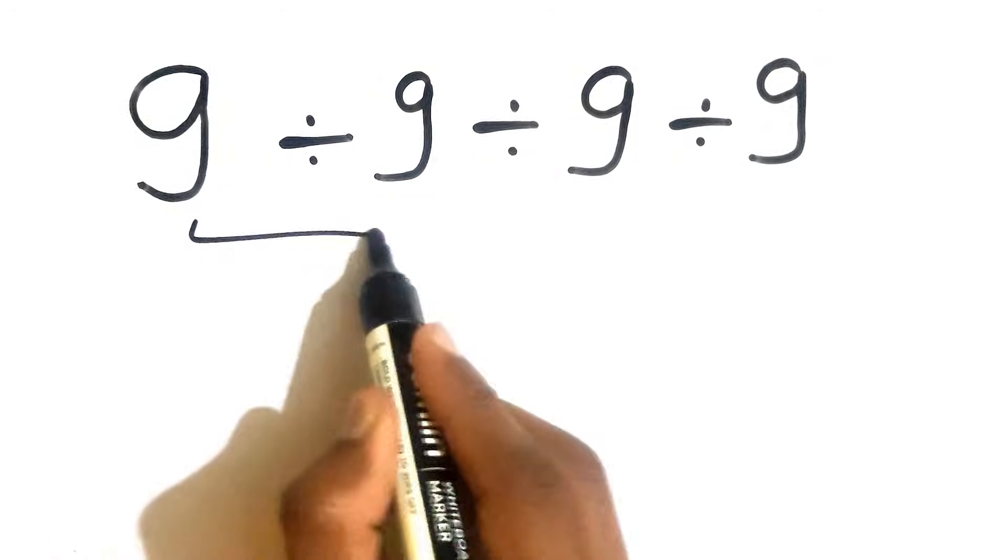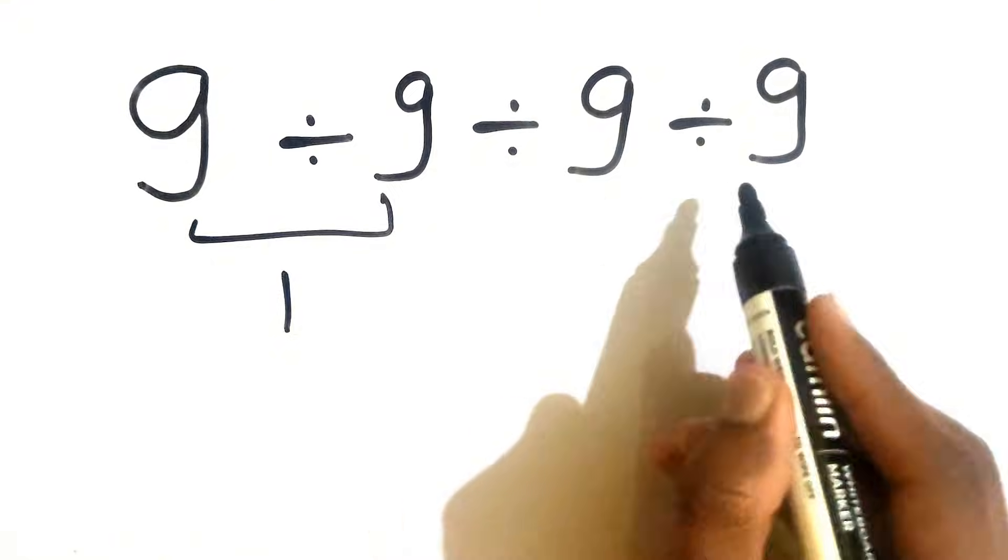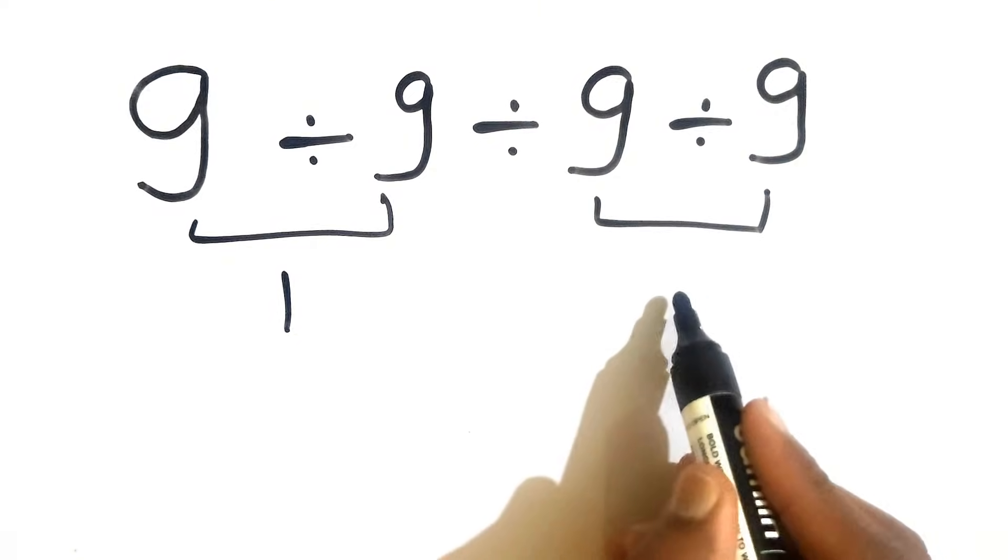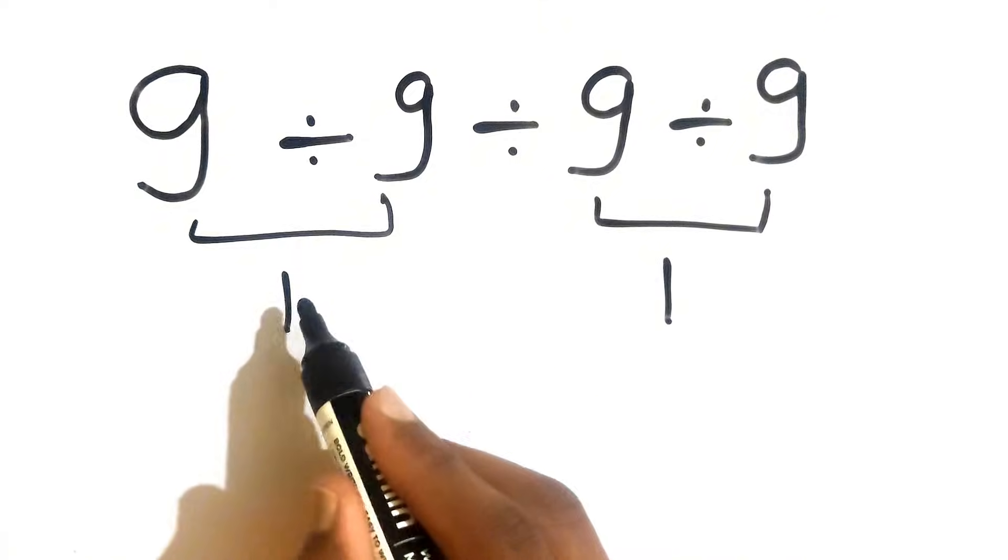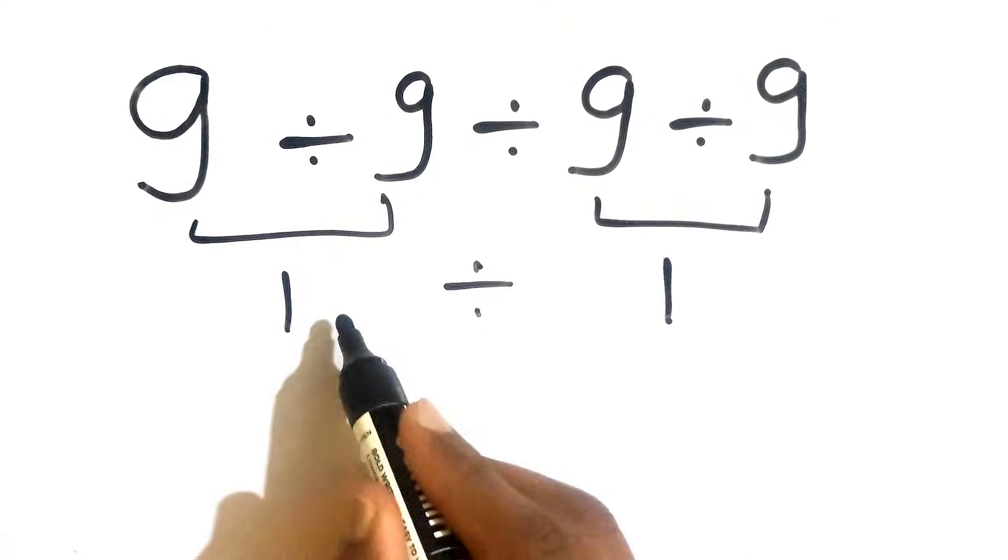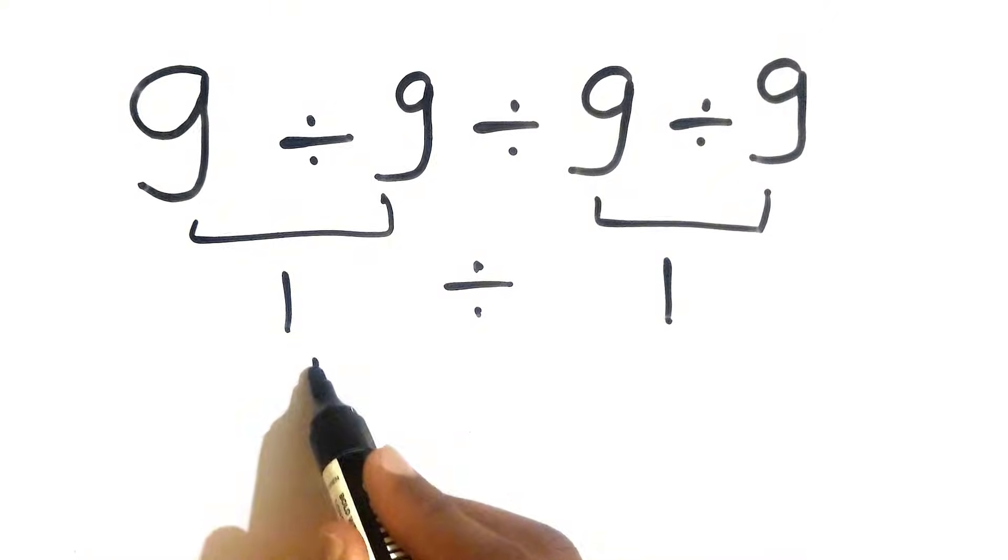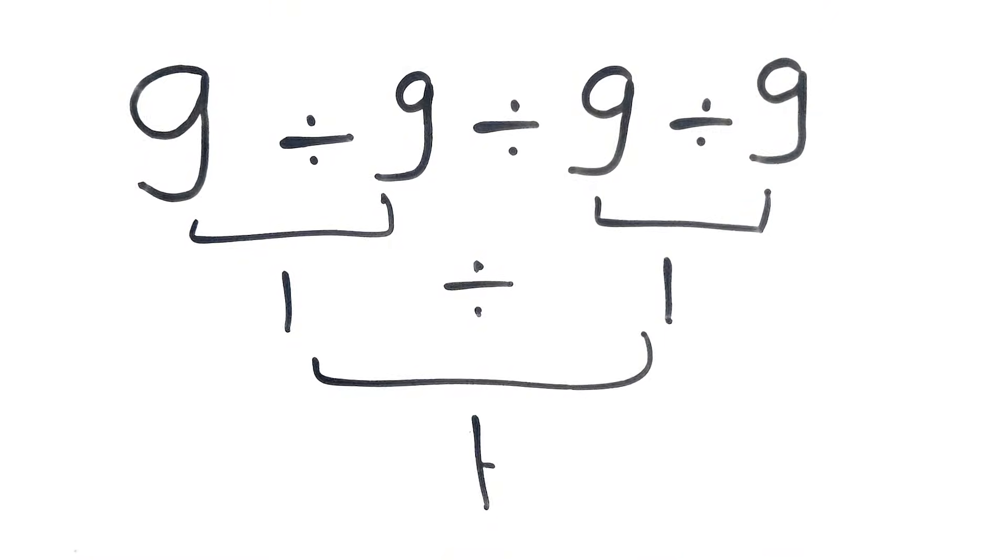9 divided by 9 gives us 1, and again this 9 divided by 9 also gives us 1. Now 1 divided by 1 gives us 1, but this answer is not correct because we have not followed the proper order of operations.